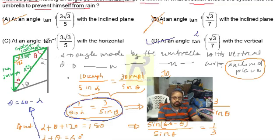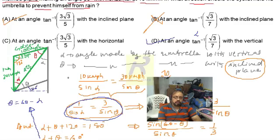The other option gives the angle with the horizontal. Since the inclined plane makes 30 degrees with the horizontal, solving for that angle gives a different value — so that answer is wrong.